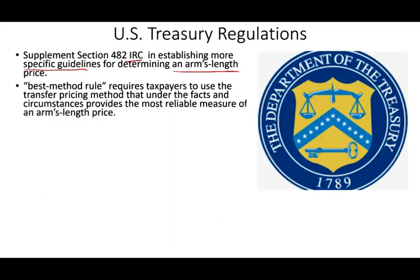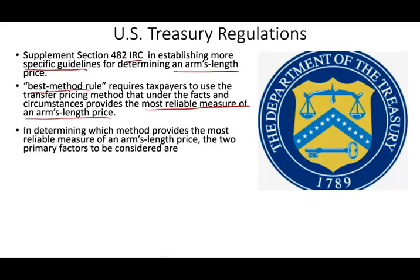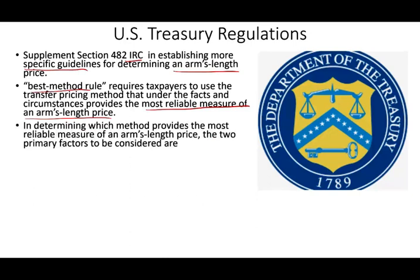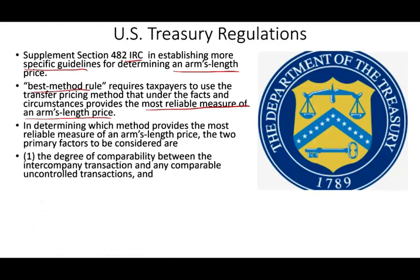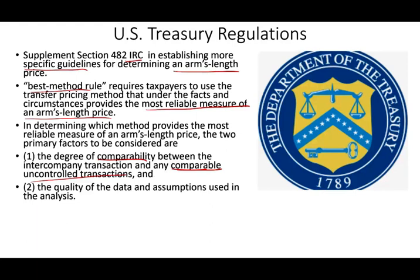U.S. regulations include the best method rule, which requires the taxpayer to use the transfer pricing method that, under the facts and circumstances, provides the most reliable measure of an arm's length transaction. In determining which method provides the most reliable measure, you must consider two things: comparability — the degree of comparability between the intercompany transaction and any comparable uncontrolled transaction — and the quality of the data and assumptions used in the analysis.